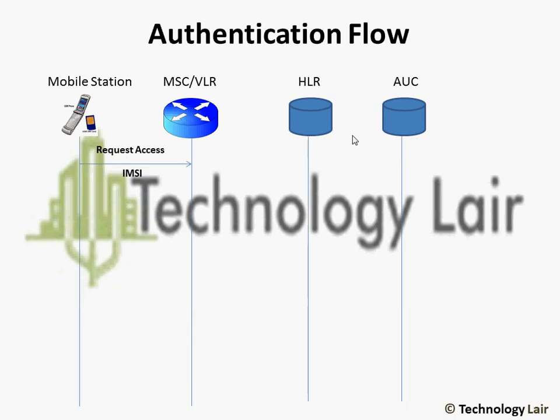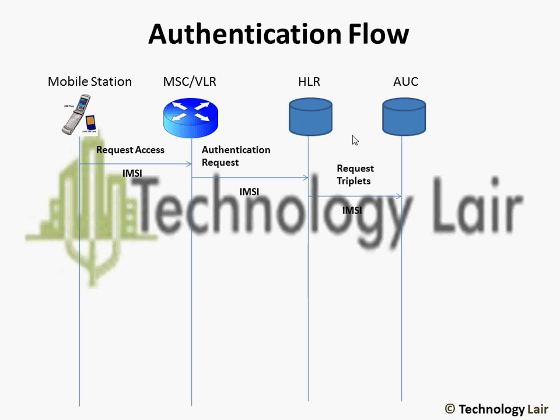When the MS requests access to the network, the MSC VLR will normally require the MS to authenticate. The MSC will forward the IMSI to the HLR and request authentication. When the HLR receives the IMSI and the subscriber request, it first checks its database to make sure the IMSI is valid and belongs to the network. Once accomplished, it will forward the IMSI and the authentication request to the authentication center and request authentication triplets.